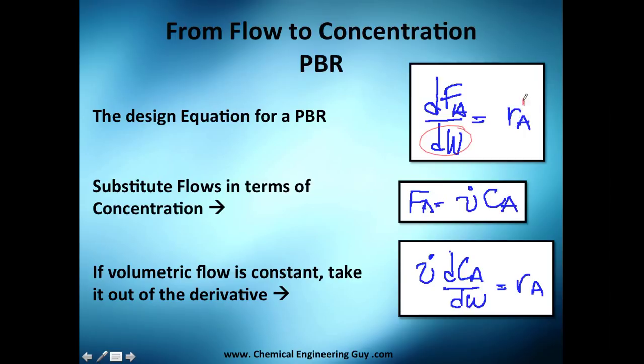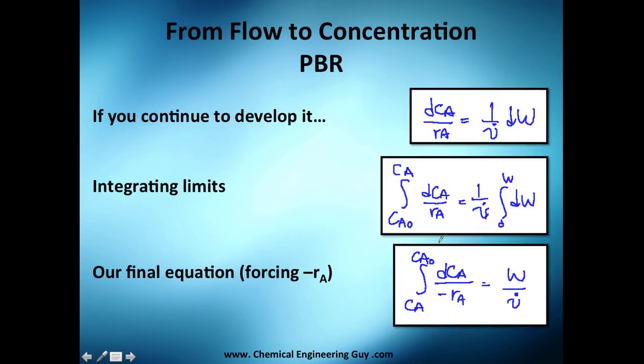Now PBR is exactly the same, but we're going to be using these concepts. Yeah, I forgot this symbol here, but it's exactly the same as previously. We are going to substitute this here, and the volumetric flow rate is constant so we can take it out. Then we integrate, force once again the minus r_A here, and we get W divided by volumetric flow rate.